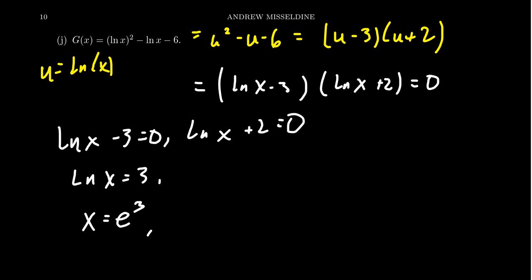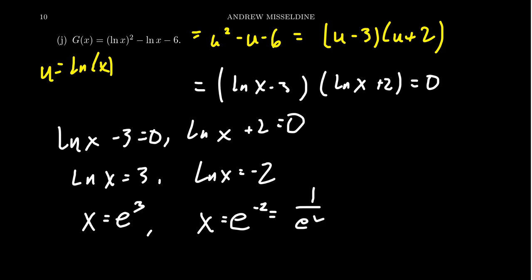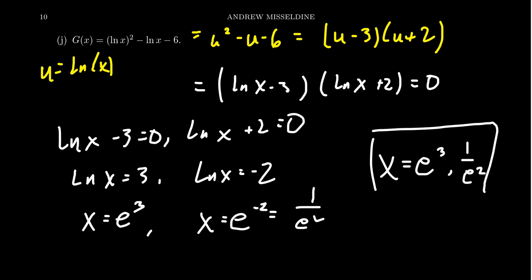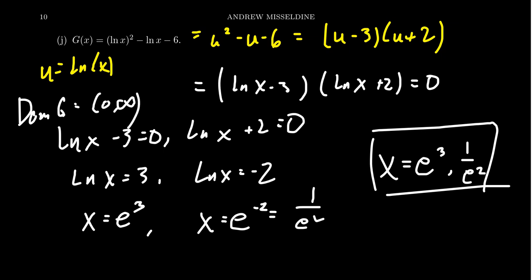Pay attention to domain and range issues with the natural log. You can exponentiate both sides even when the right-hand side is negative, so x = e^(-2) is valid. The domain of g is (0, ∞), and both x-intercepts e³ and 1/e² fall within that domain, so neither is discarded. This function will have a vertical asymptote at x = 0, because the natural log has that vertical asymptote at x = 0.